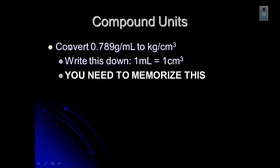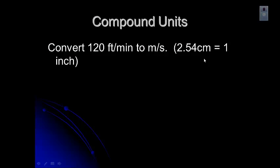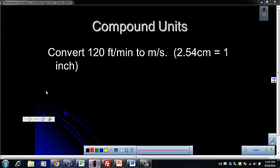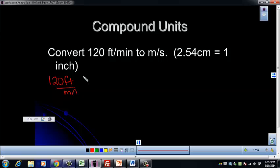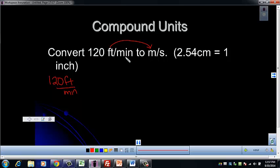Let's try another one. Remember, any time you're given an equality like this, you can turn it into a conversion factor. Go ahead and pause the video and try to set this one up — think about which unit will convert to which unit and give it a shot. Starting with what we have in the problem: 120 feet per minute, with minutes on the bottom. We want to convert to meters per second. Feet are a unit of length and meters are also a unit of length, so feet will go to meters. Minutes are a unit of time and seconds are a unit of time, so minutes will convert to seconds.